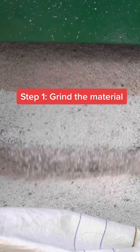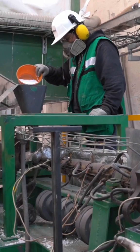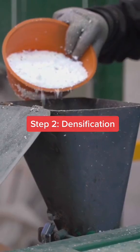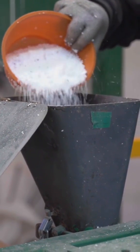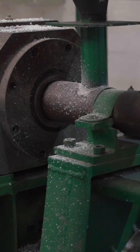Workers first grind the material to make it easier to manage. Then they apply heat and pressure in a process called densification, which squeezes out excess air, leaving reusable plastic behind.